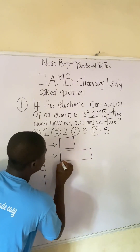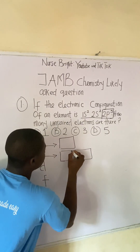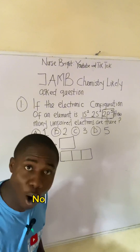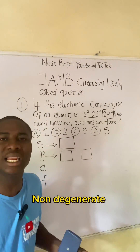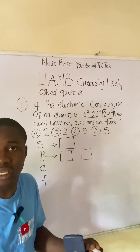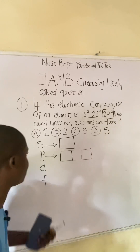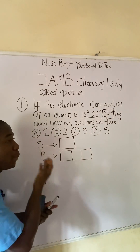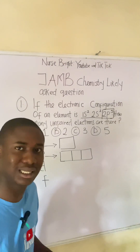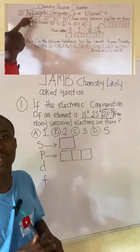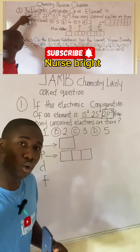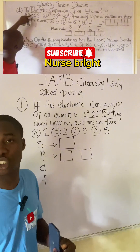The s orbital is a non-degenerate orbital, meaning that it does not degenerate. But the p orbital is a degenerate orbital. I already have a full video lesson on this particular aspect on my YouTube channel on the topic called quantum numbers.